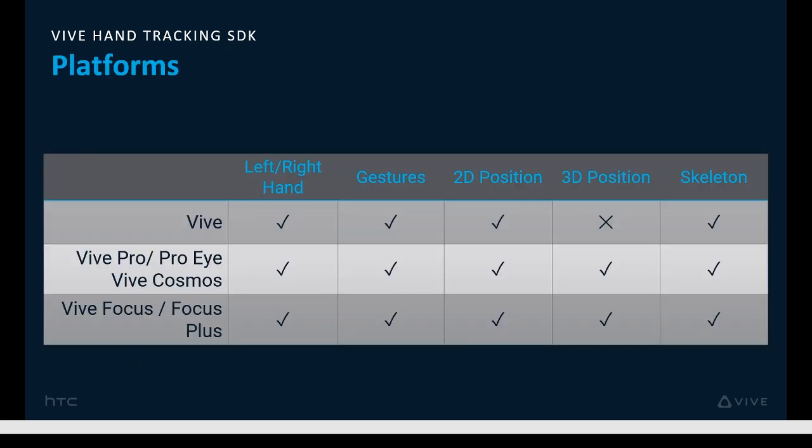We even support the original Vive, as well as some Android phones. This chart shows you which modes are supported per platform. The original generation Vive headset only had one camera, so it doesn't support 3D positioning — however, it does support gestures. We will also be adding additional headsets to this list.